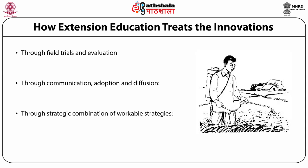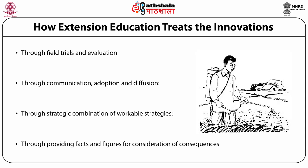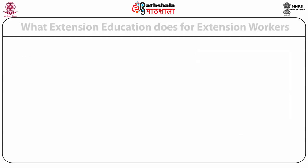The fourth element is through providing facts and figures for consideration of consequences. It is a form of feedback to the extension system as well as the research system. Feedback plays a pivotal role in treatment of innovations — without feedback, we cannot treat the innovation in the desired manner. Learning from past experiences and providing appropriate and timely feedback to extension agencies facilitates the process of treatment of innovations.